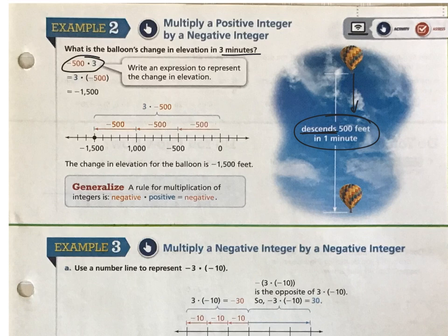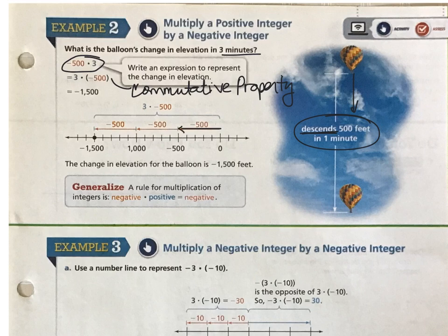Remember that multiplication has that property, it's called the commutative property, where we can switch the numbers around and we can write either number first. It doesn't matter because we get the same answer. So negative 500 times 3 should be the same as 3 times negative 500. And when we look at it from the standpoint of repeated addition, or 3 groups, 3 minutes of going down 500 feet, the question is where do we end up?